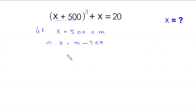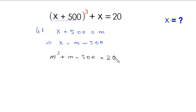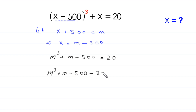After substitution, the equation becomes m³ + (m - 500) = 20. Moving 20 to the left-hand side, this becomes m³ + m - 500 - 20 = 0.